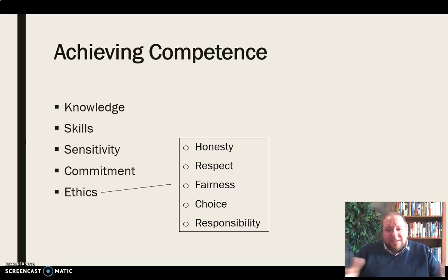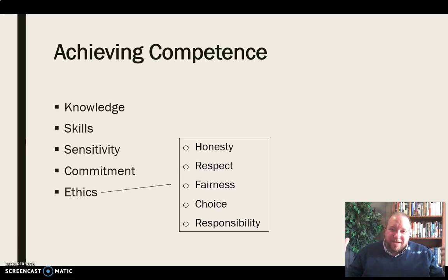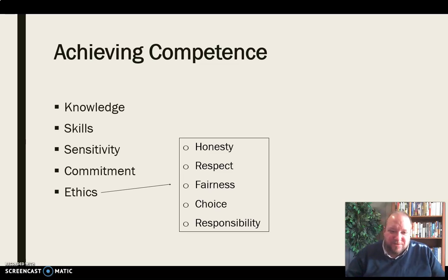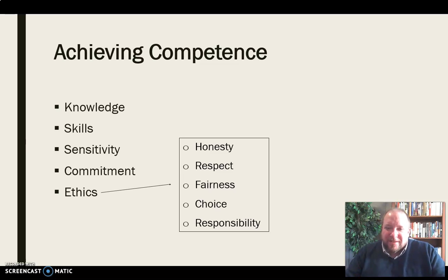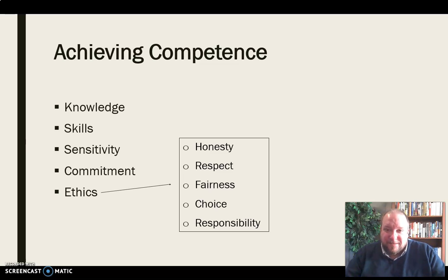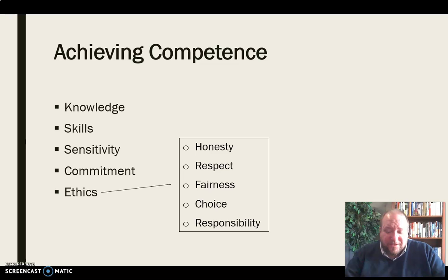So in order to achieve communication competence, we need to continue to grow our knowledge and put it into use in the form of skills. We need to have sensitivity to what's going on around us and make adjustments. We need to be committed to honing this craft, and we need to display ethics as a communicator. Put all that together and you arrive at communication competence. I would point out, though, that these are always things we're going to be growing. It's not like you ever reach a point where you say you're done — this is a continuous process that never ends, because communication never stops changing. We need to be able to change and adapt with it throughout our lifetime.